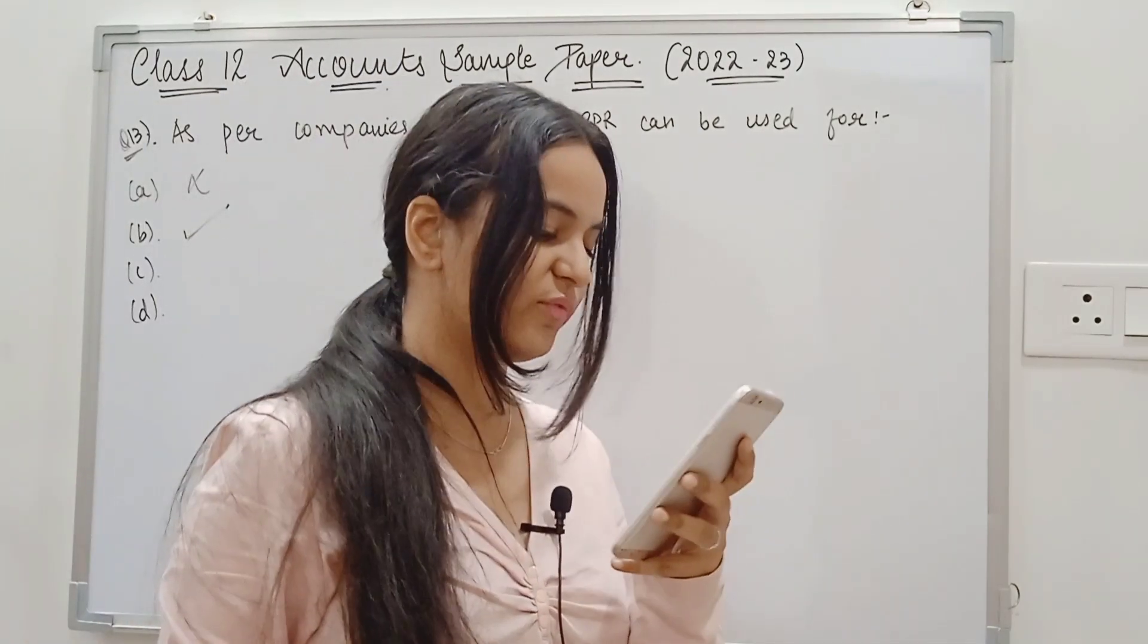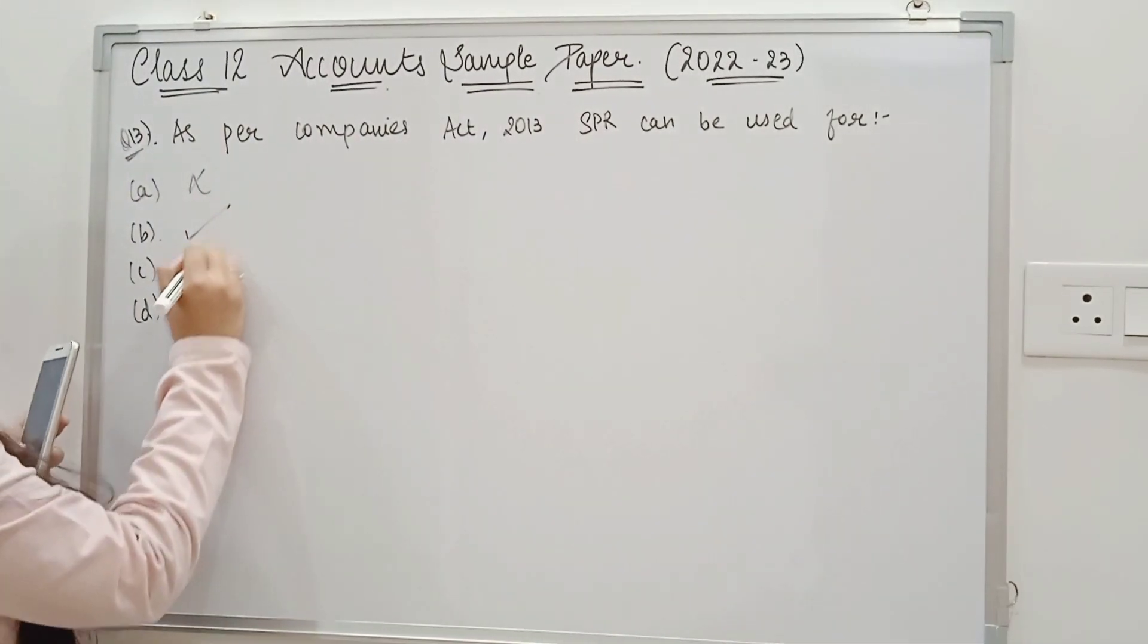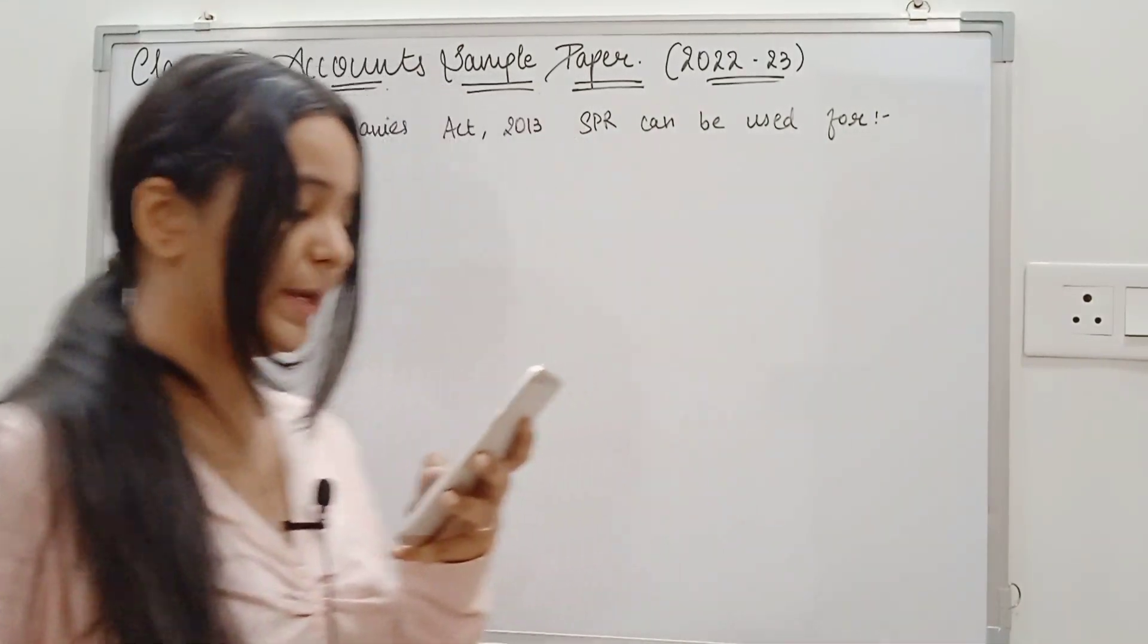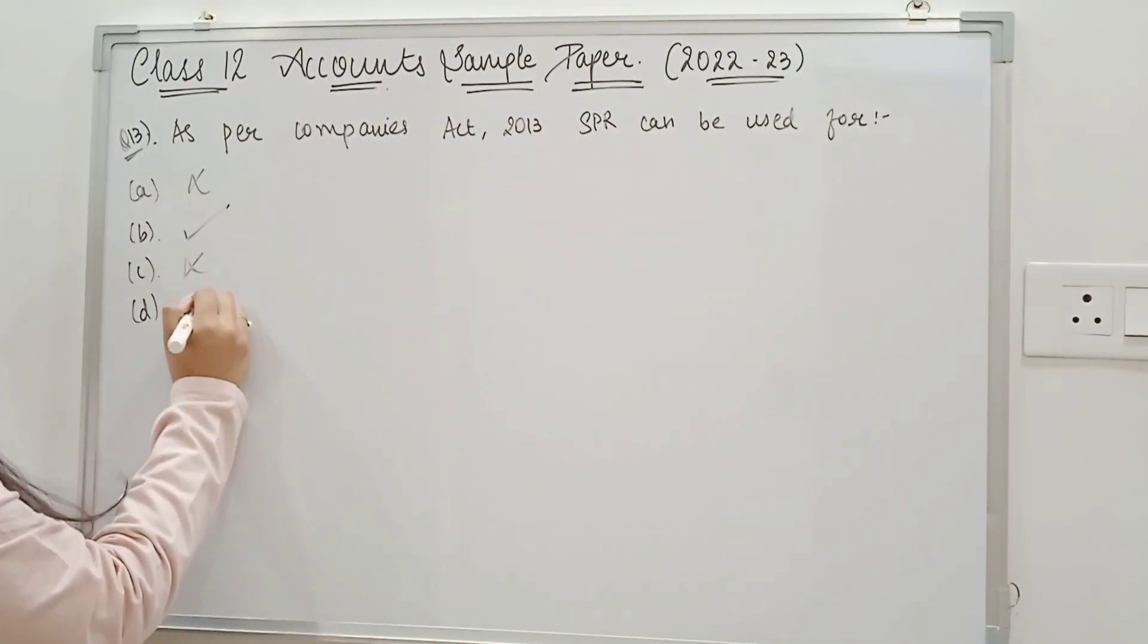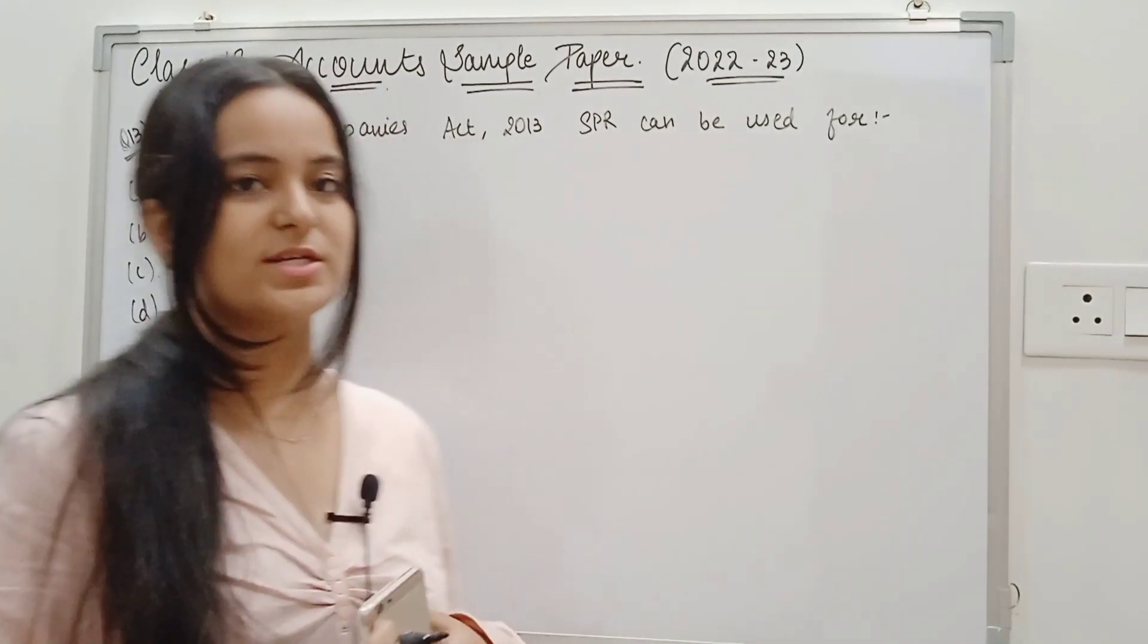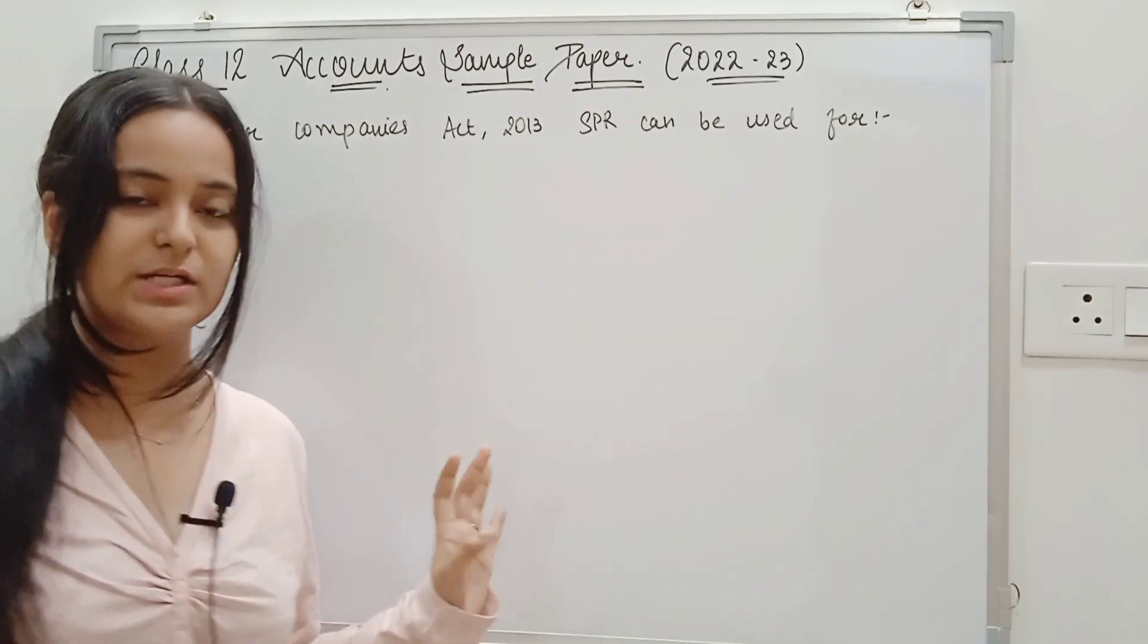After writing off all the capitalized expenditures. So for new capitalized expenditures, we don't use SPR. Buy back of debentures is not the correct option. Because if we buy back of shares, we can use SPR. Buy back of debentures time, we don't use SPR.